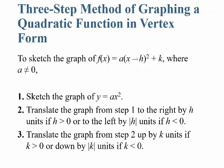Depending on the sign: if it's minus h, you're moving it to the right; if it's plus h, you're moving it to the left. Then translate the graph up k units if k is greater than 0, or down k units if k is less than 0. So if it's plus 3, you move up 3; if it's minus 3, you move down 3.